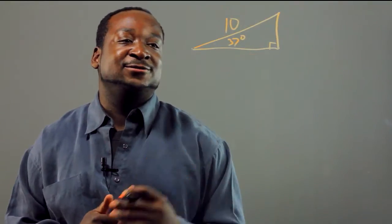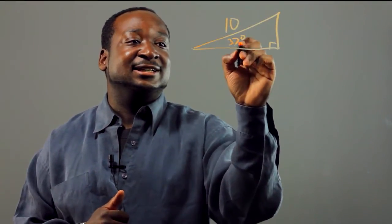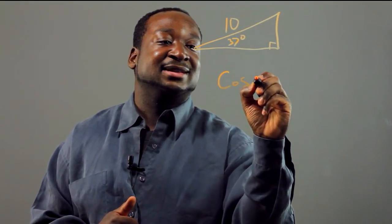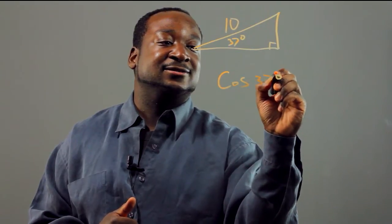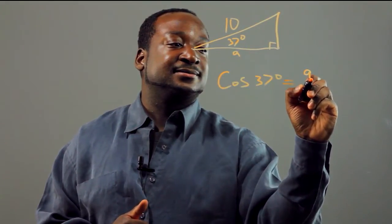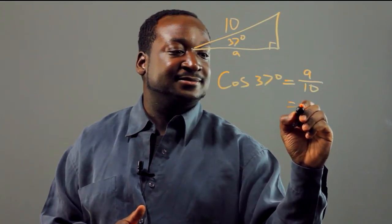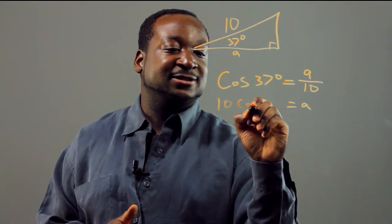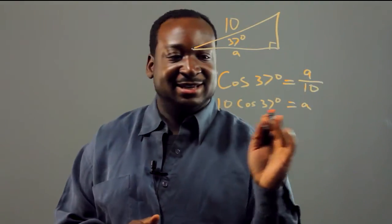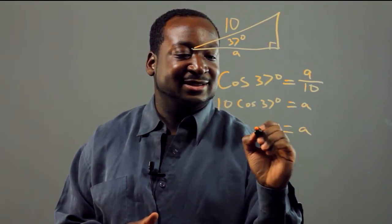What we're going to do is take the cosine, which is a ratio of the adjacent side over the hypotenuse. The cosine of 37 degrees equals this side — we'll call it a — over 10. So a equals 10 times the cosine of 37 degrees. You can solve that using a scientific calculator and we get a equals 8.